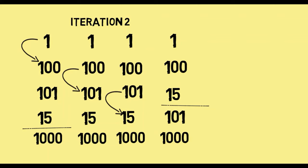So 15 and 101 are swapped — 15 moves up and 101 moves down. At the end of the second iteration, or more generally at the end of the nth iteration, the last n numbers are sorted. So if this is the end of the second iteration, the last two numbers are in the correct position. As you can guess, in the next iteration, number 3, the last three elements at the end of iteration 3 will be sorted.